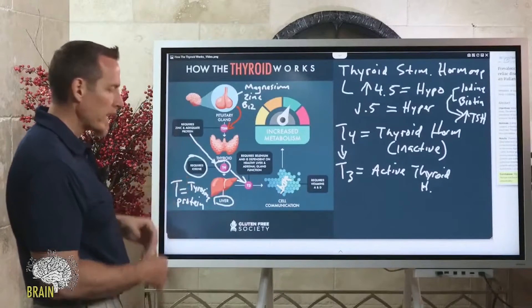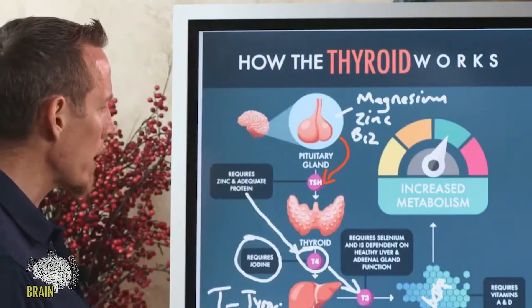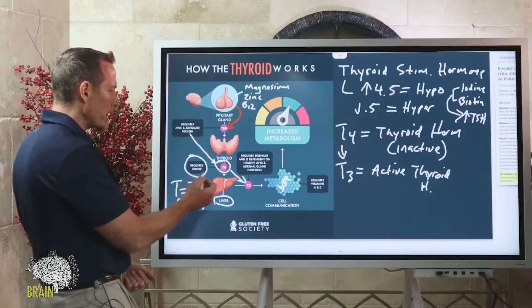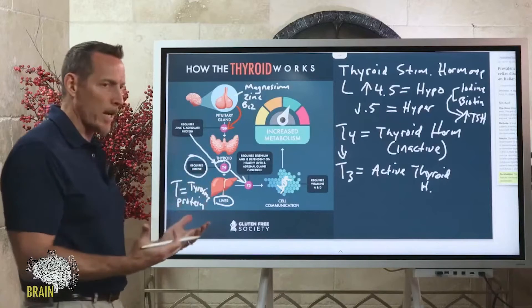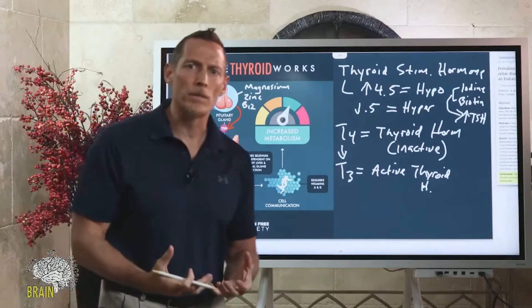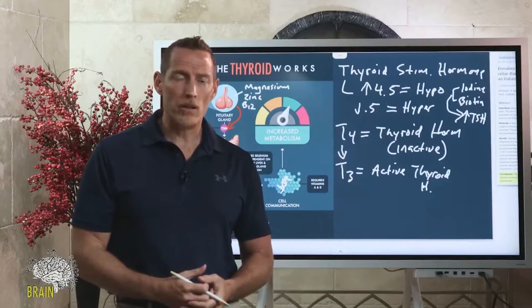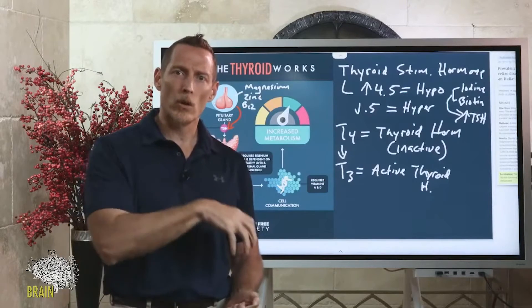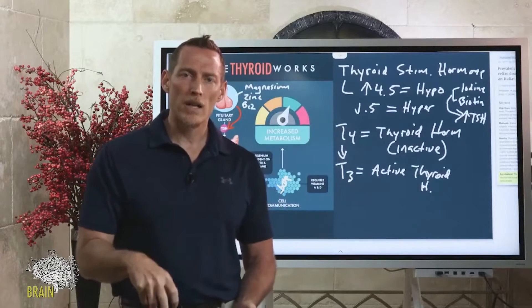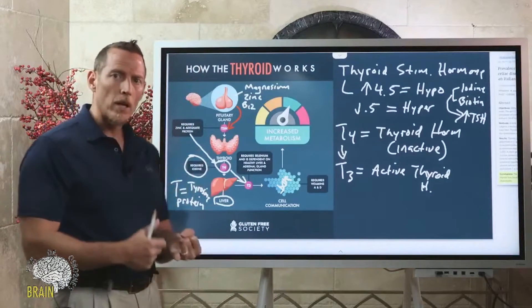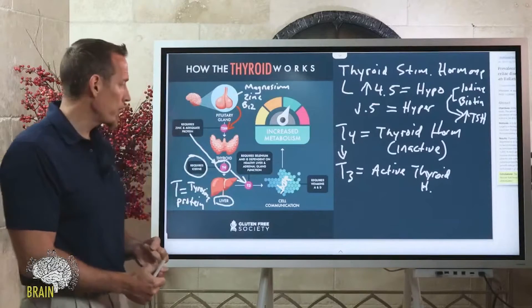Many people are undereating and not getting adequate tyrosine, so their body struggles to produce thyroid hormone. Many also don't get adequate iodine — we predominantly get iodine from seafood and saltwater sources. Our soil is not super rich in iodine in most places in the world.